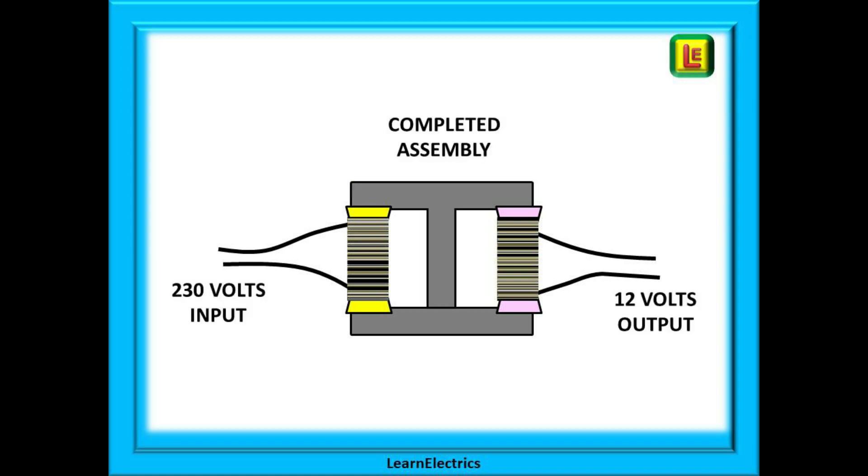The completed assembly looks like this with a 230 volt input winding and a 12 volt output winding. As the output is less than the input we call this a step down transformer. The voltage has been stepped down from 230 volts to 12 volts. This function is achieved by having less turns of wire on the secondary or output side. Just as an example, if we had 10,000 turns on the primary and only 1,000 on the secondary, this is a ratio of 10 to 1, so the output voltage would be just 1 tenth of the input voltage. So with 230 volts input, one tenth of this is 23 volts output.